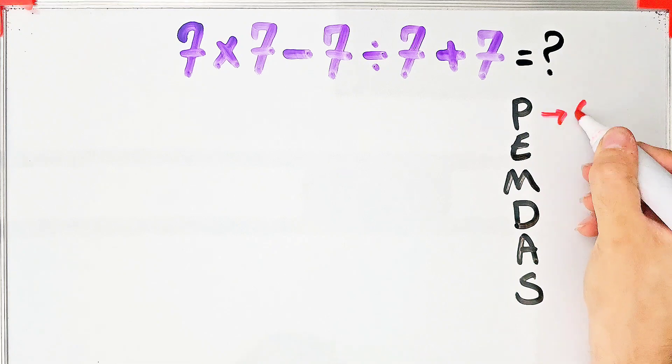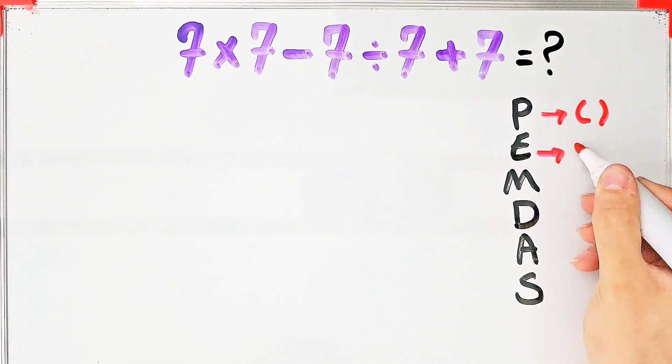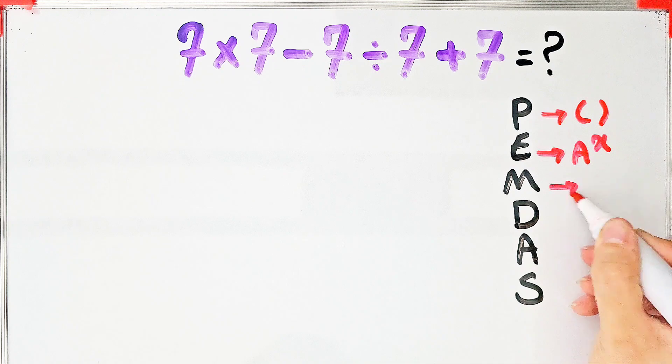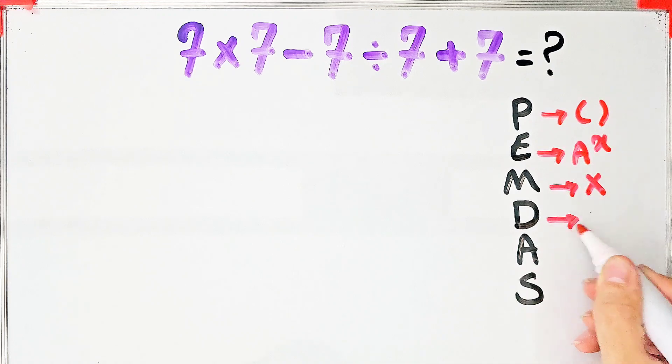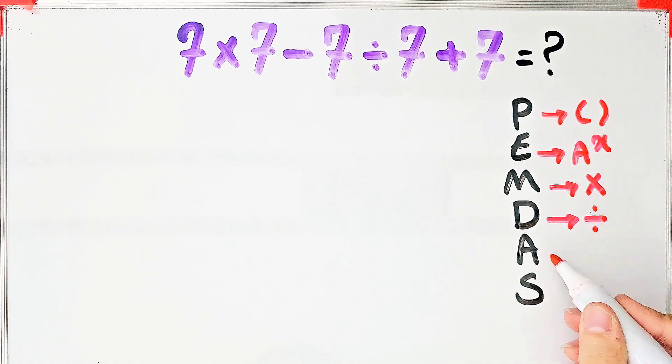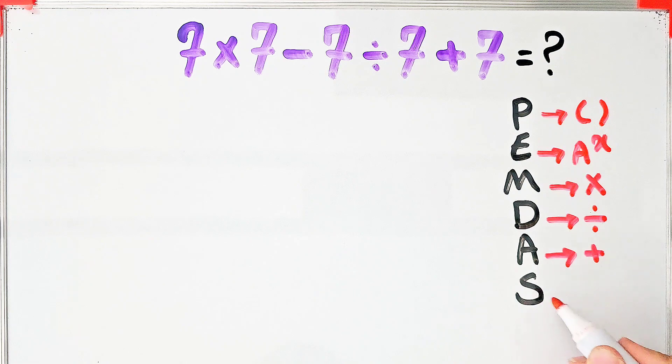In this rule, P stands for parentheses, E stands for exponent, M stands for multiplication, D stands for division, A stands for addition, and S stands for subtraction.